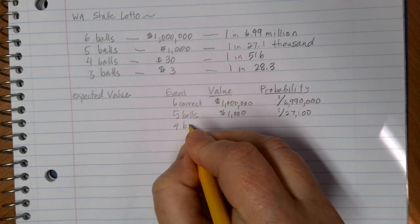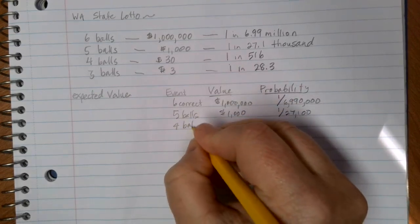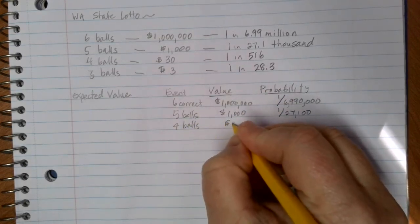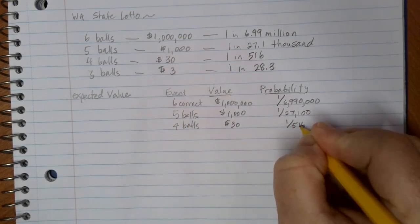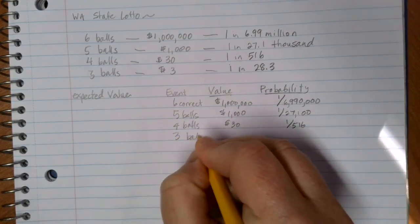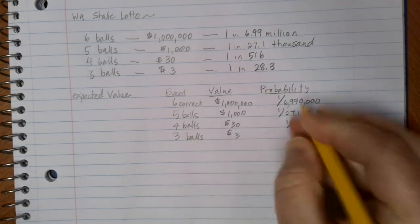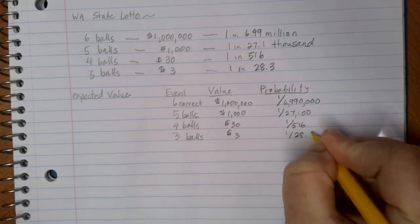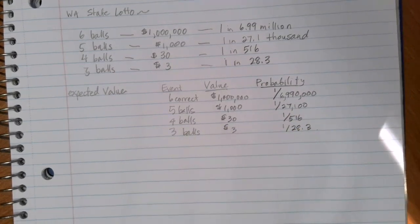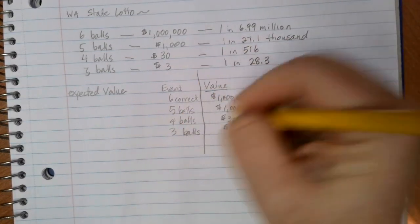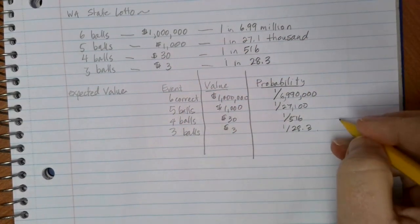Four balls correct is $30, with a 1 in 516 chance, and three balls correct is $3, with a 1 in 28.3 chance. So here we have our events, here we have our values, and here we have our probabilities.